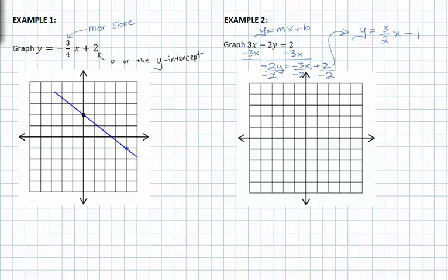It's now in slope-intercept form, which is awesome because now we can figure out where I need to plot my first point where the line crosses the y-axis. In this case, it's negative one because this represents b. b equals negative one. My slope m equals three halves, or three over two.